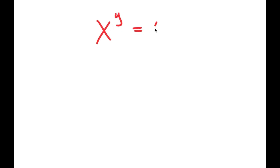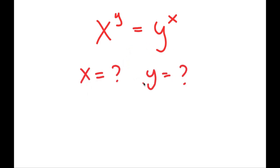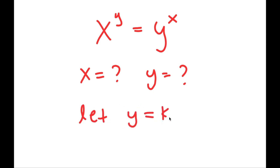Now I'm going to solve the equation x^y = y^(x^x), finding both values of x and y — there could be multiple solutions. To solve this, I'll let y equal k times x, where k is a constant that can be any number.